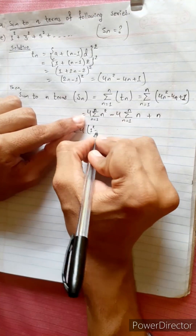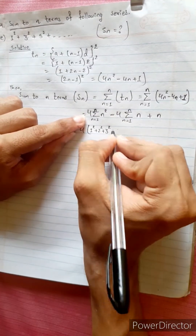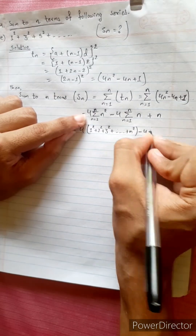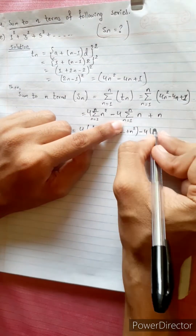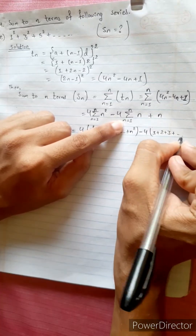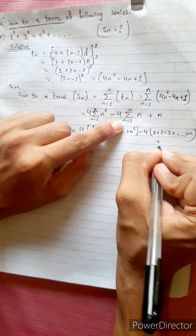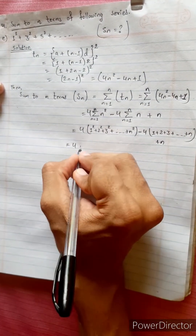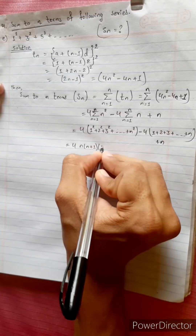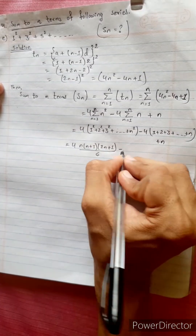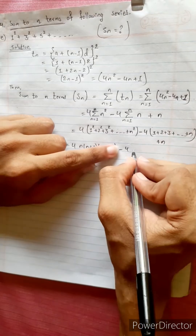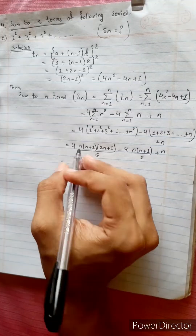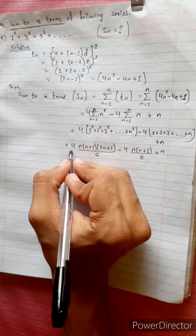The sum of squares of natural numbers uses the direct formula: n(n+1)(2n+1) divided by 6. Minus 4 times the sum of natural numbers: n(n+1) divided by 2. Plus the remaining n.